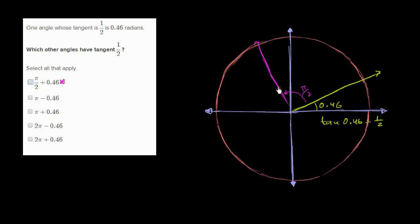They are perpendicular because they have an angle of π over 2 between them. They're definitely not going to have the same tangent.